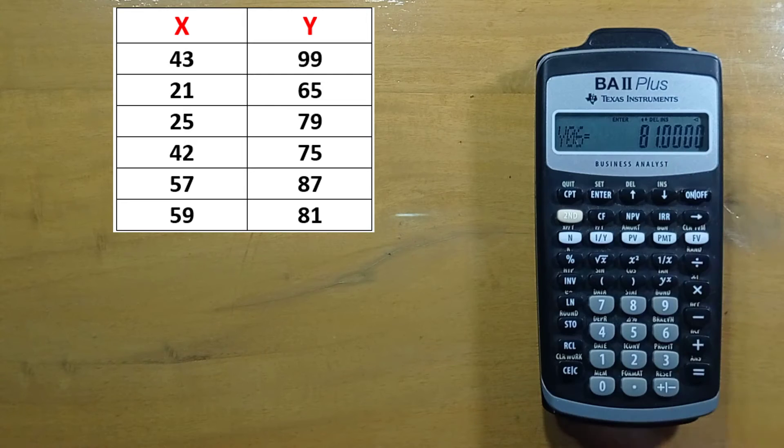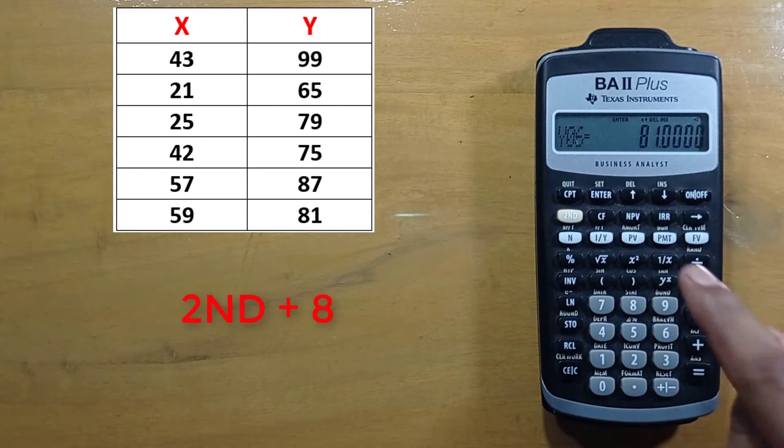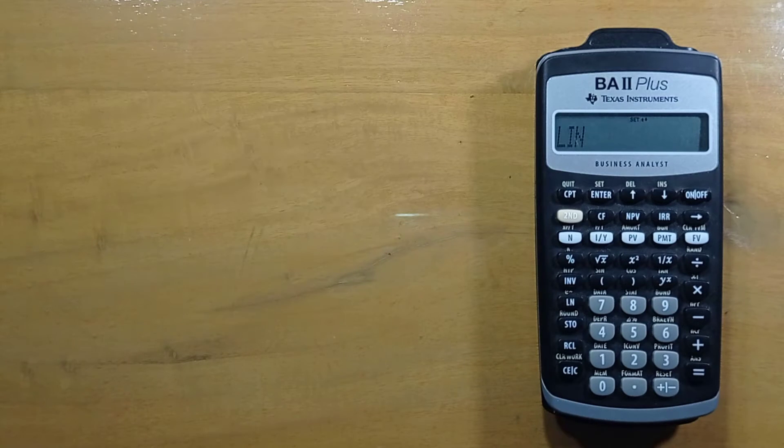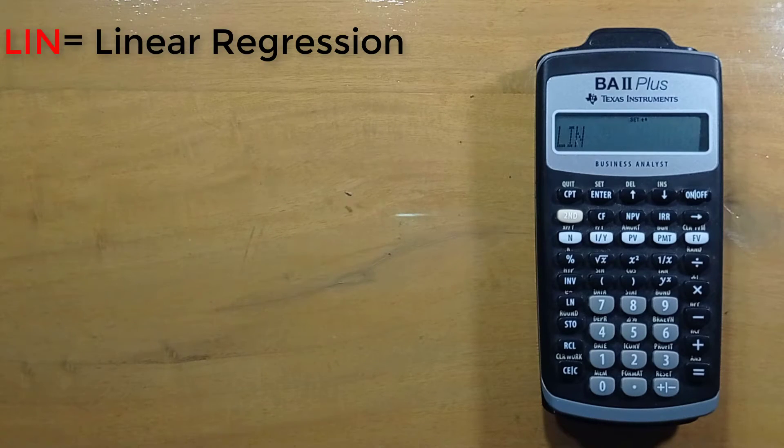After entering all values, press second and eight. This calculator analyzes data on different regression models. The default setting is lin, which stands for linear regression model.